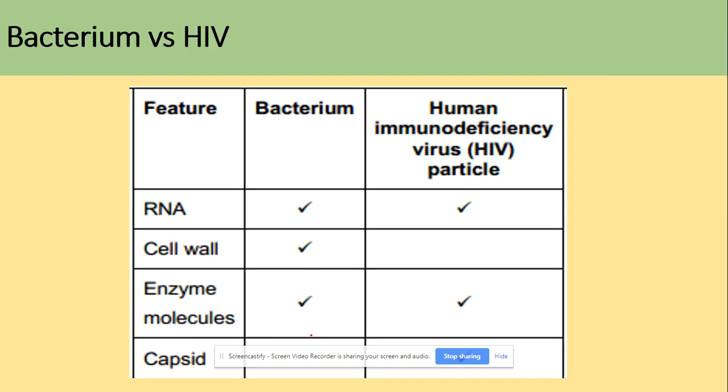So a few questions comparing bacterium and HIV. RNA present in both, cell wall only in bacterium, enzymes in both, and capsid only in HIV.